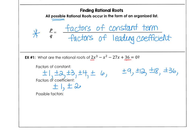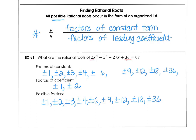Making our p over q list using factors of the constant divided by factors of the coefficient, we first have 1, 2, 3, 4, 6, 9, 12, 18, and 36 from dividing by 1. Then dividing by 2, we get additional terms for the odd numbers: 1/2, 3/2, and 9/2 — since 4/2, 6/2, 12/2, 18/2, and 36/2 are already in our list.